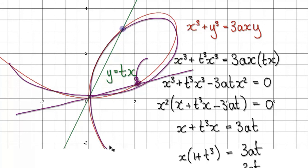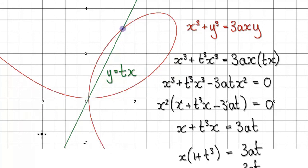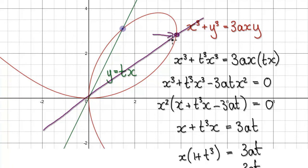So you can increase T. Remember, T represents the gradient of the straight line. We can keep track of this, and eventually it will lead us to our parametric equations.